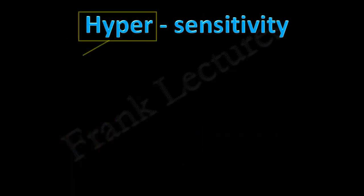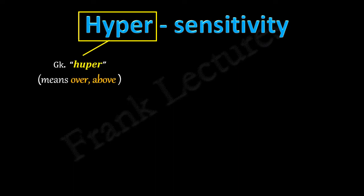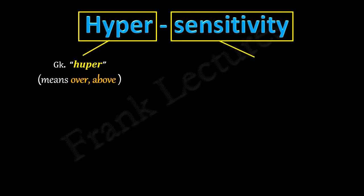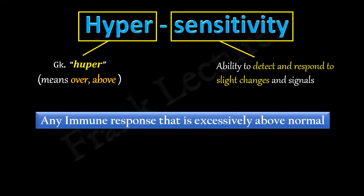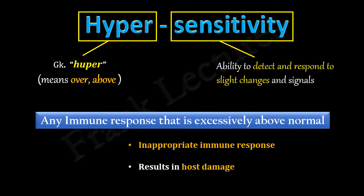Now look at the term hypersensitivity. Hyper is derived from the Greek term hyper, which means over, beyond or above. And sensitivity means the ability to detect and respond to slight changes or signals. Hypersensitivity is defined as any immune response that is excessively above normal. It is an inappropriate immune response that results in host damage.